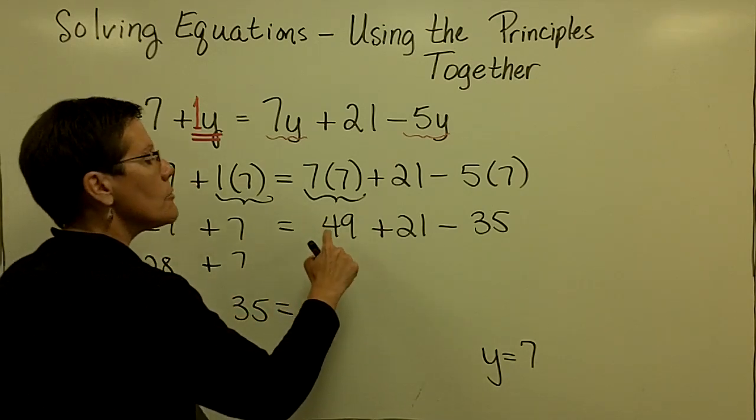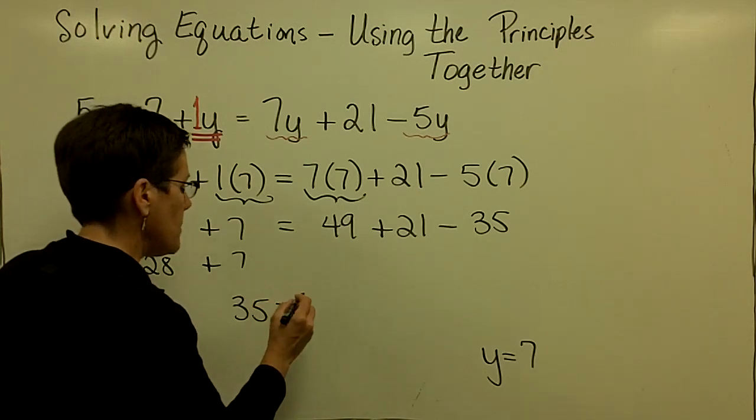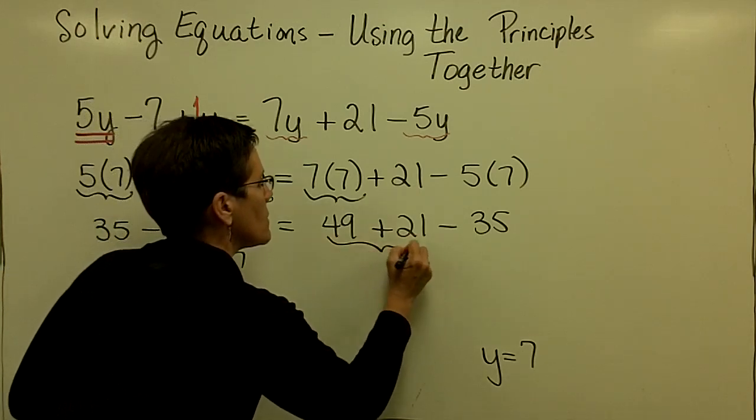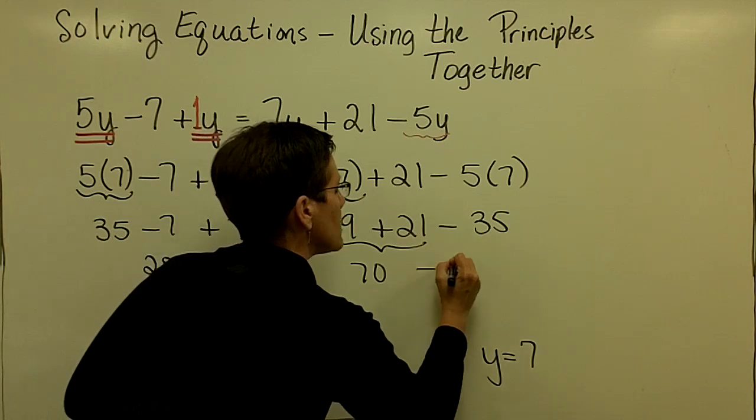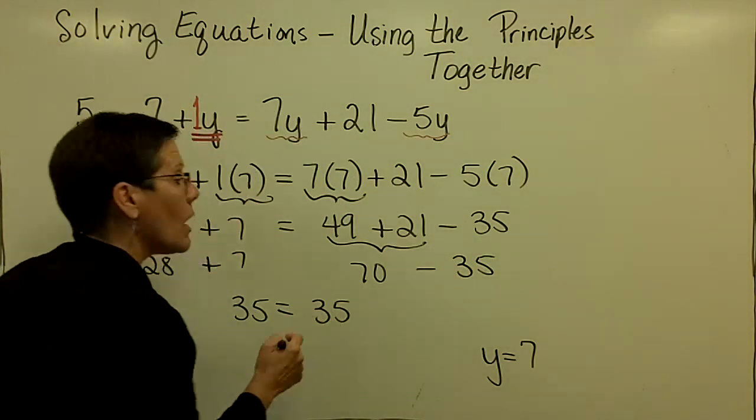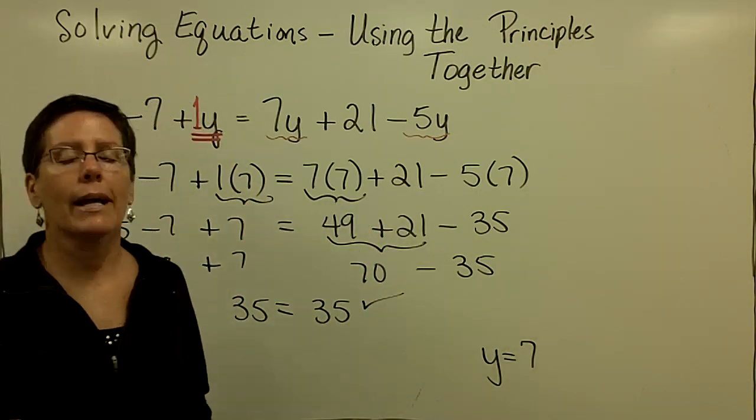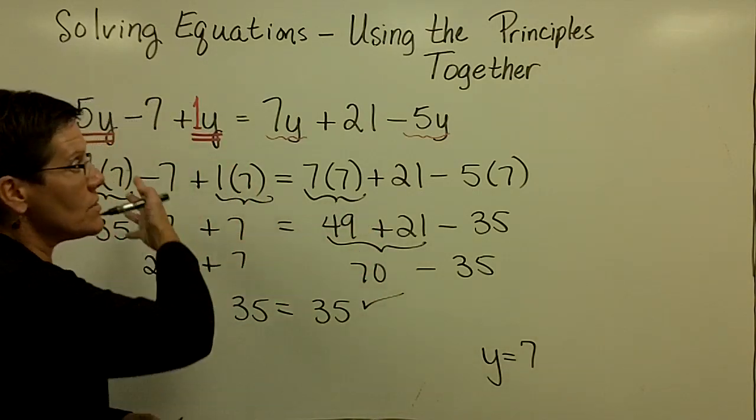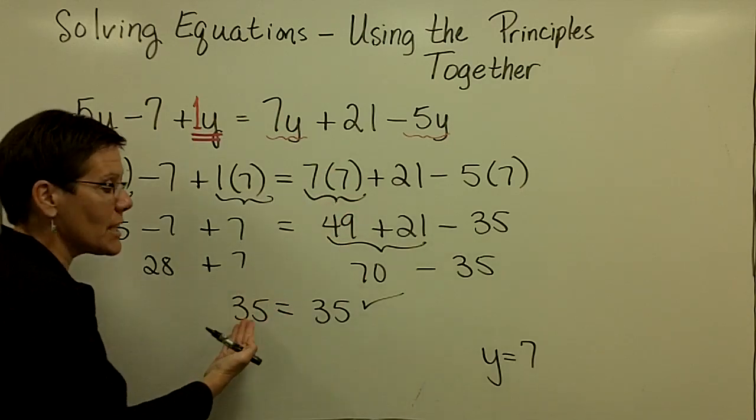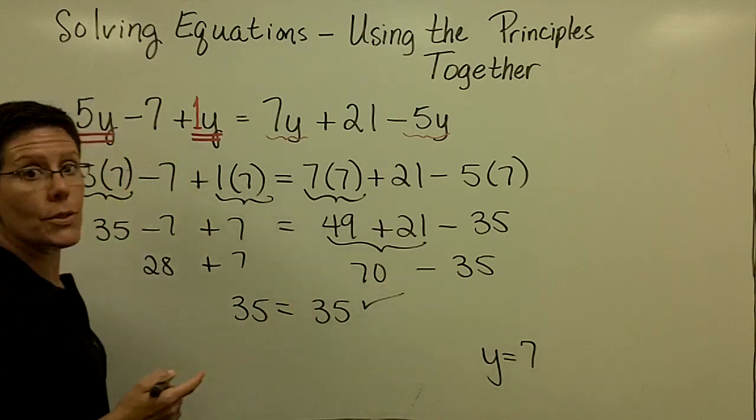On the right-hand side, 49 plus 21 is 70. And so this 70 minus 35 is indeed also 35. And I can say I know my solution of y equals 7 is correct because when I substituted into the original equation, it gave me a statement that was true. That's why that answer is correct.